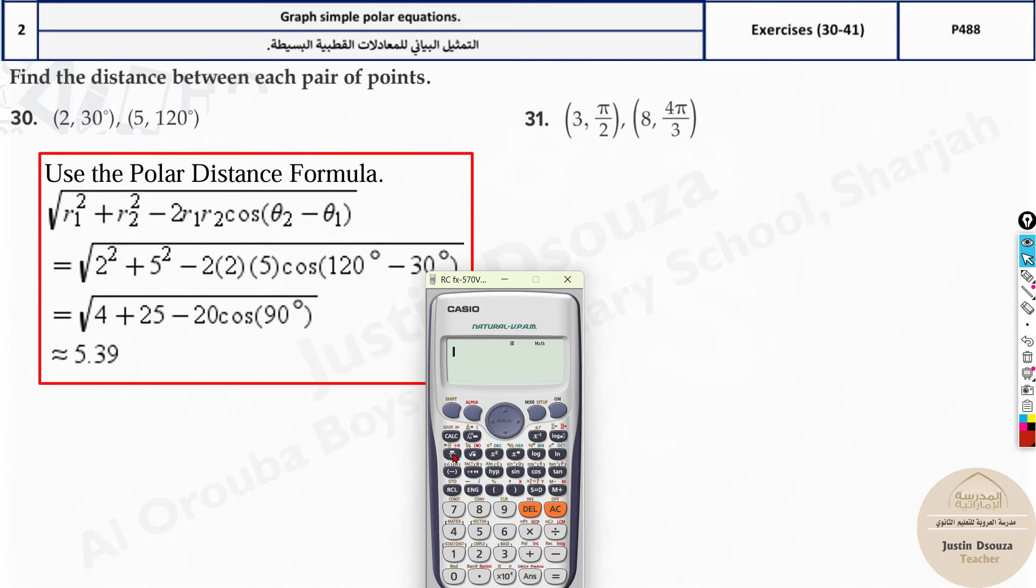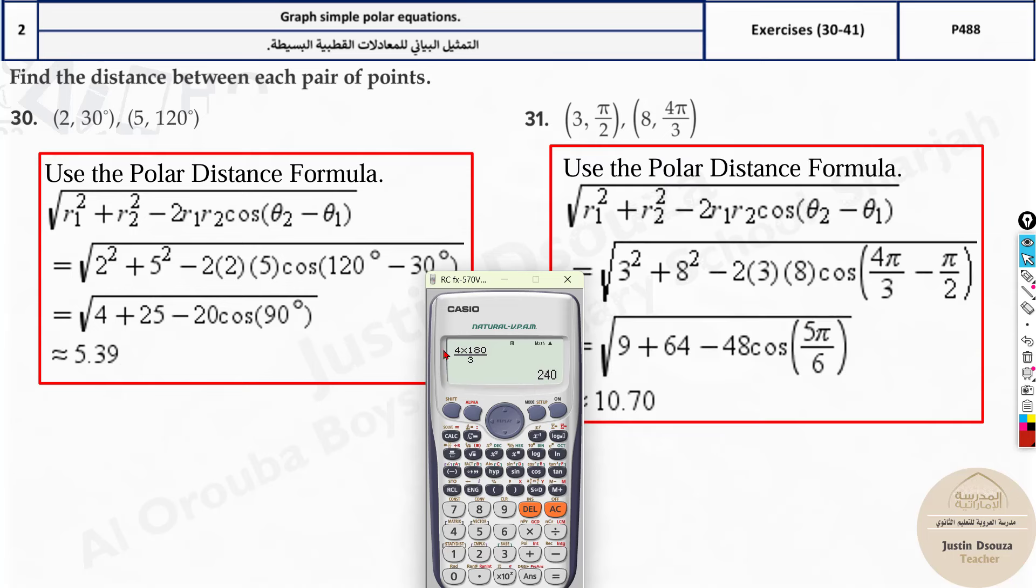4 pi by 3. So what you need to do is wherever pi is there, just put 180 degrees divided by 3, and the answer is 240. So use 90 and 240 degrees here and solve it up. You'll get the correct answer itself. Let me show you. So it's square root, radius 1 is 3 squared plus 8 squared minus 2 times 3 times 8 times cos theta 2 is over here, we got 240 minus 90. Close the brackets and the answer is 10.70. So this is a more better way to do it. So I hope you're clear with this.